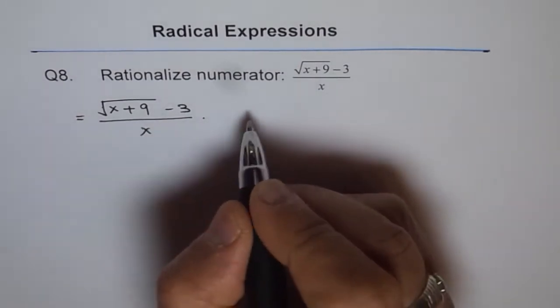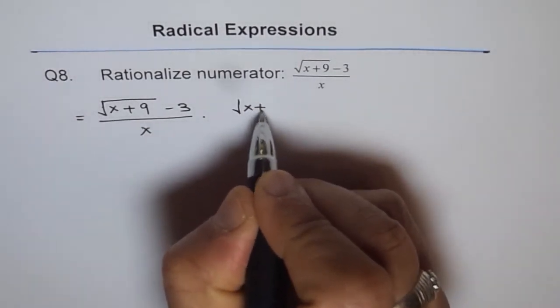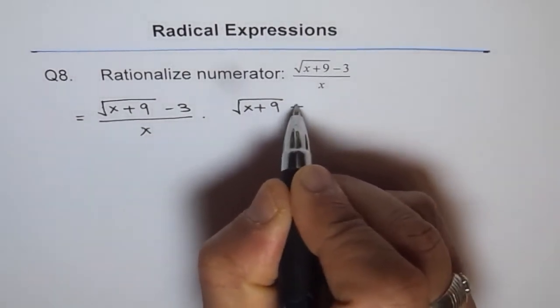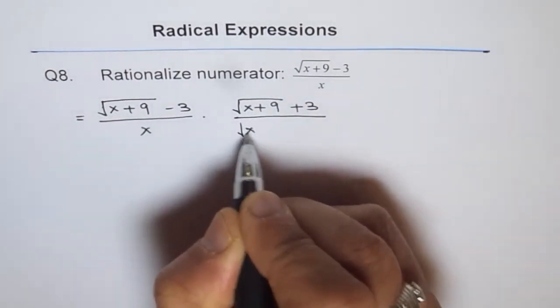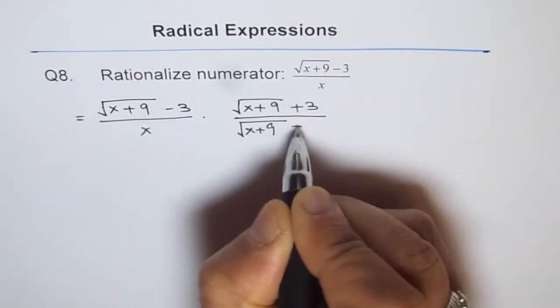What is the conjugate of this? It is square root of x plus 9 plus 3 divided by square root of x plus 9 plus 3.